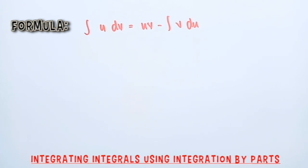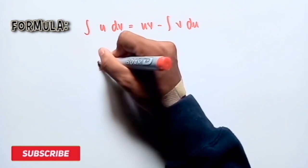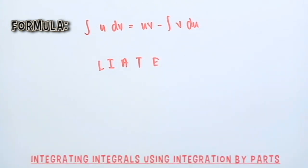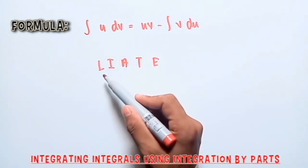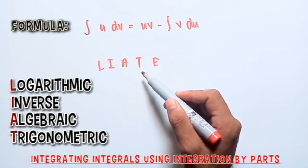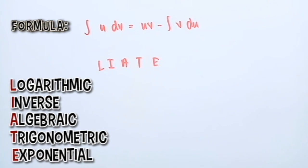Let's start and use this formula to try some examples. To easily recognize what to put for U and dv, use the LIATE method. L stands for Logarithmic, I for Inverse, A for Algebraic, T for Trigonometric, and E for Exponential.